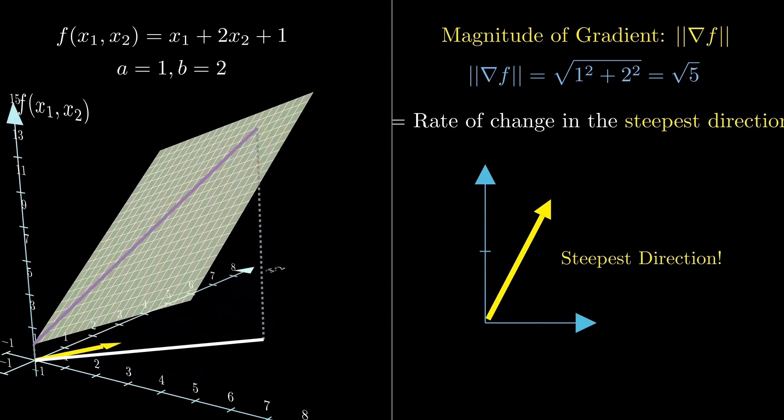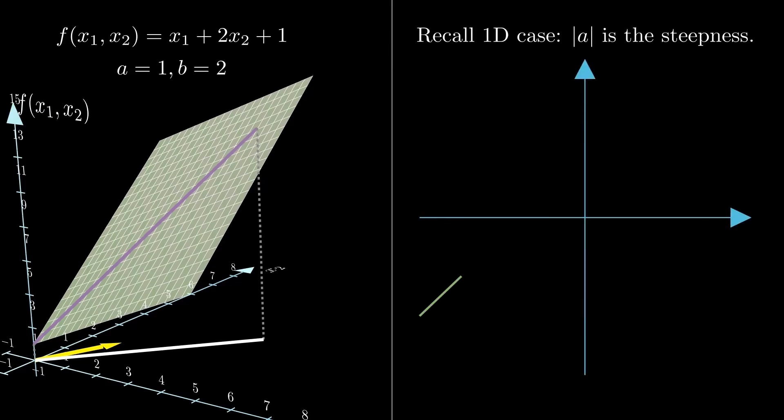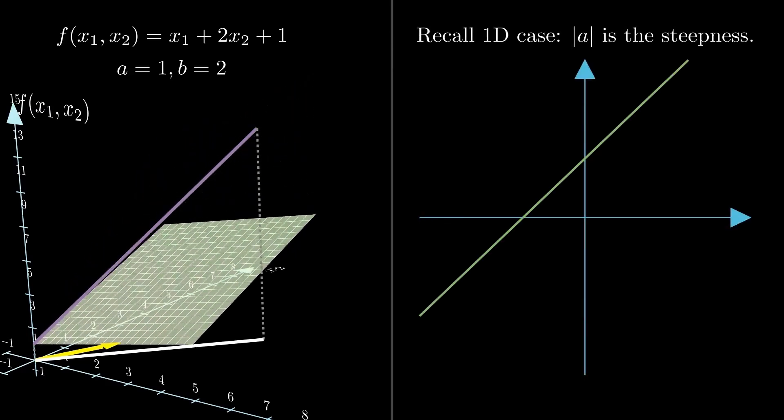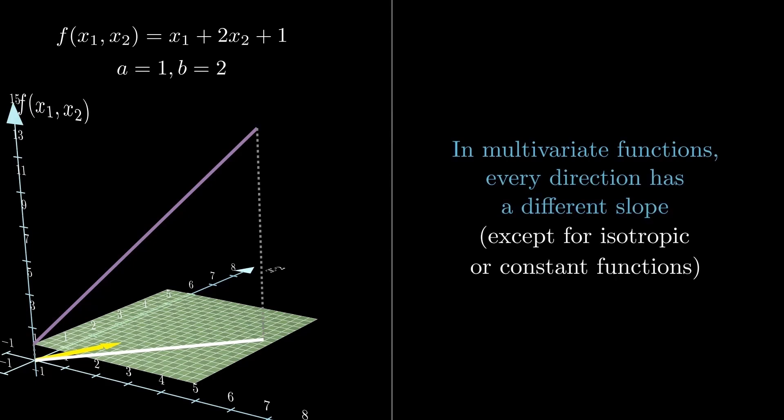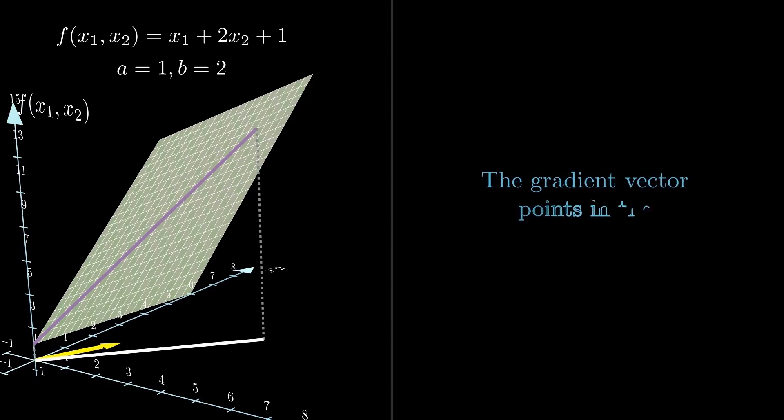In single variable functions, the absolute value of the derivative gave us the steepness of the curve—right, just one line to worry about. But in multi-variable functions you can draw lots of different lines on the surface, and each one has a different slope. Among all those, the steepest one is the gradient direction, and the size of the gradient vector is the slope in that direction: the maximum rate of change.